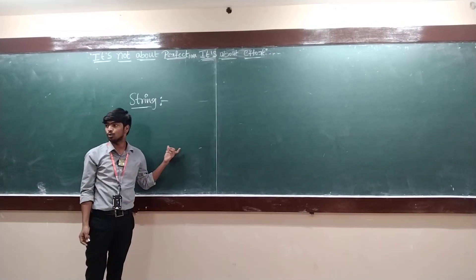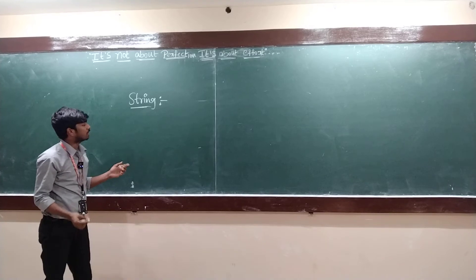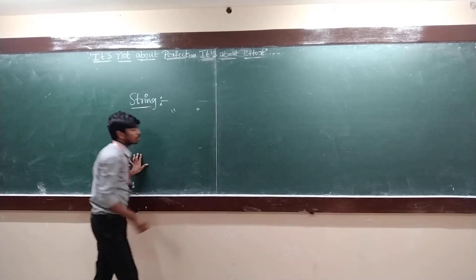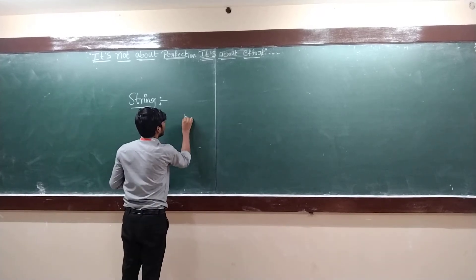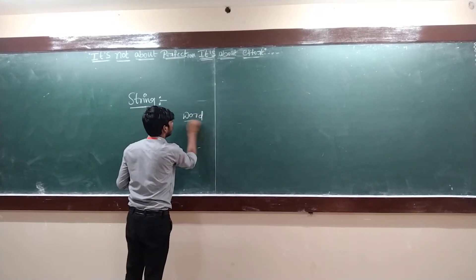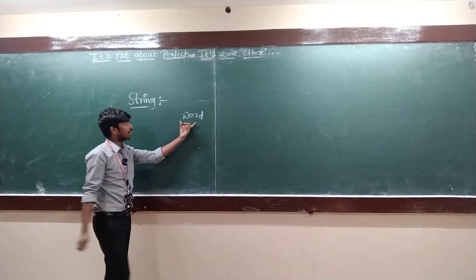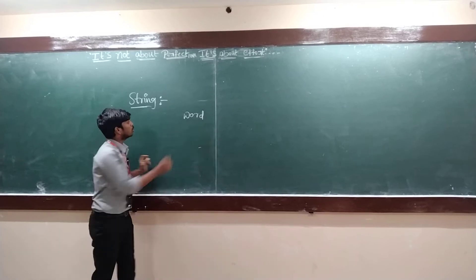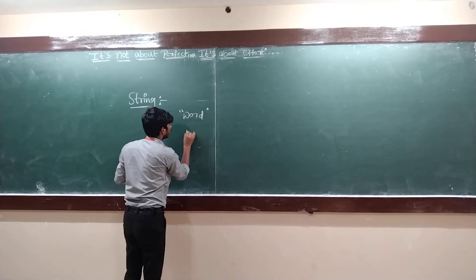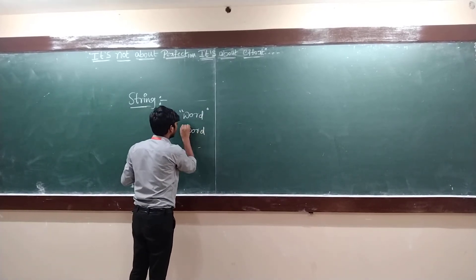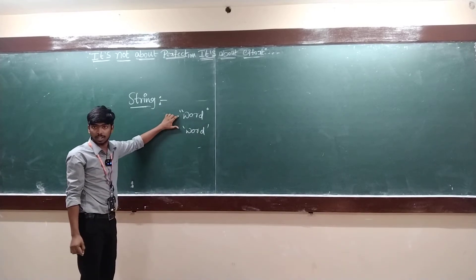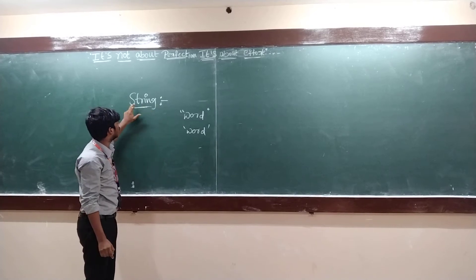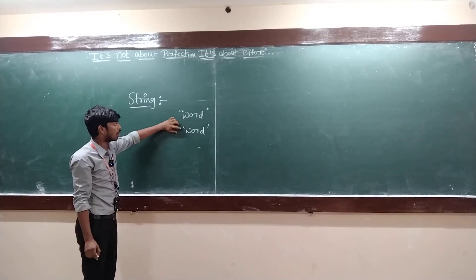String is a basic data type used in programming. A string is usually denoted by double quotes or single quotes. When you take a word, it is a group of characters. When you keep double quotes or single quotes around that word, it becomes a string in Python. So in Python, you denote a string with double quotes or single quotes.